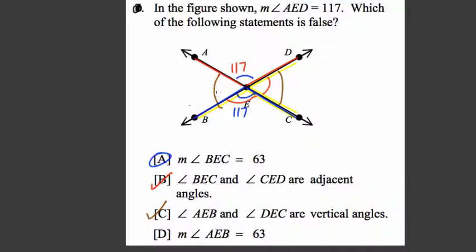AEB is 63 degrees. That's true, because 63 and 117 add up to 180. They're supplementary. So the only case here is not true is A. Thanks.